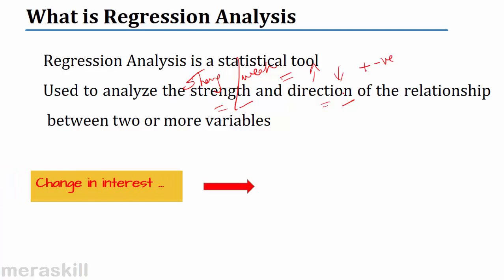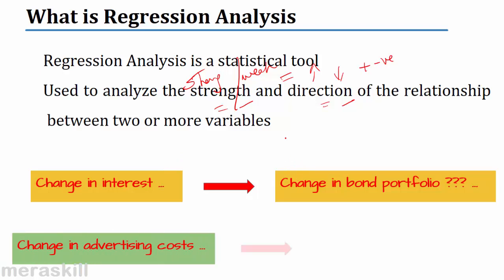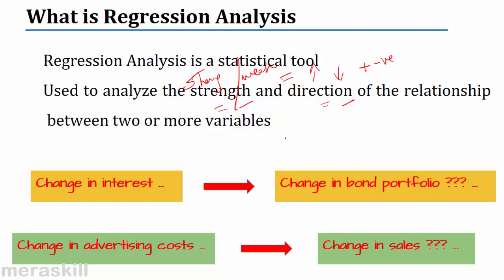For example, if there is a change in the interest rates, would there be a change in the bond portfolio? Bonds are based on interest rates — the income from a bond portfolio comes from interest rates. So what is the effect of a change in interest rates on the bond portfolio? When interest rates go up, does the bond portfolio increase or decrease? Similarly, if there is a change in advertising costs, does it affect sales? Does it improve sales in the next quarter or the next year?